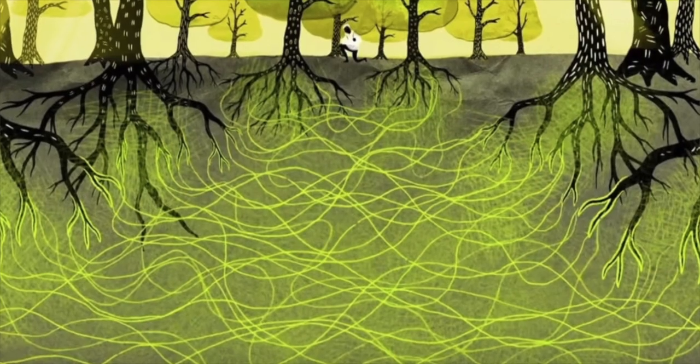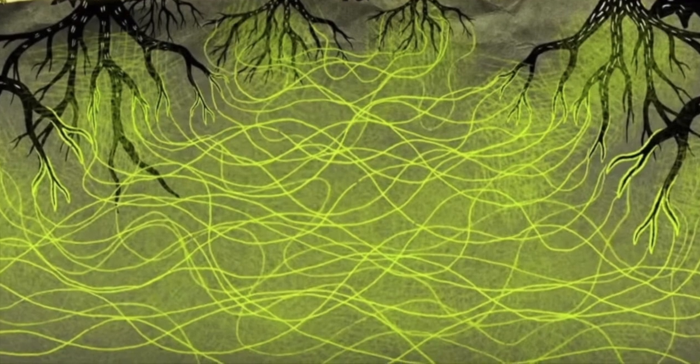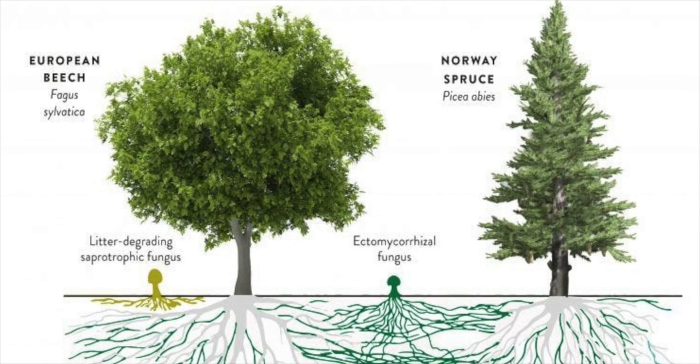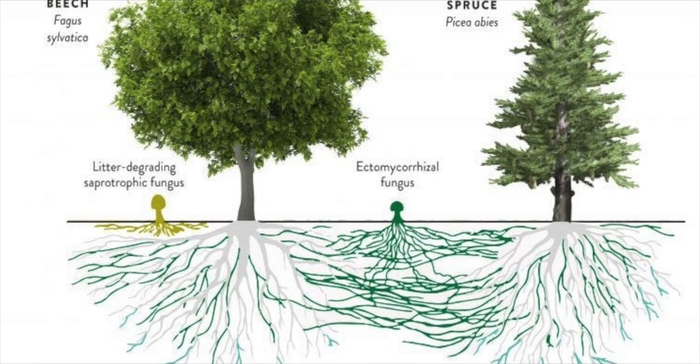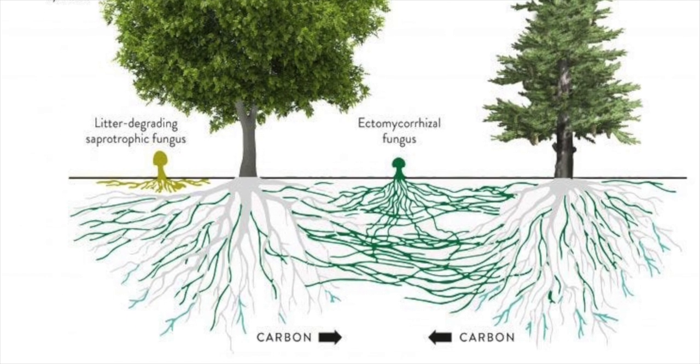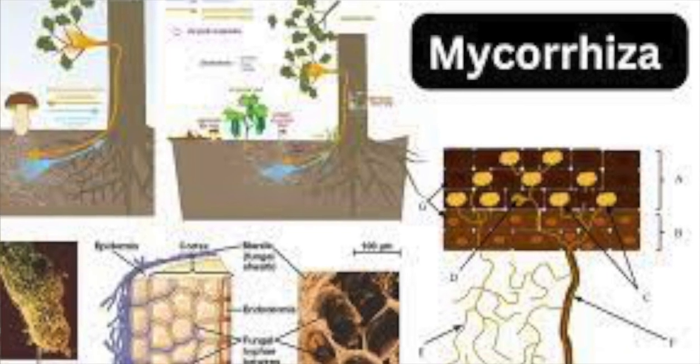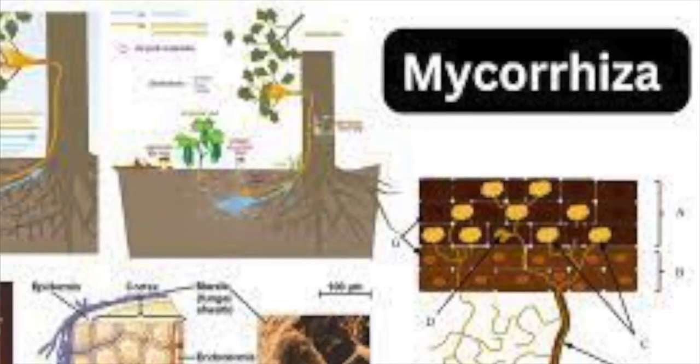But is that truly the case there? Recent studies reveal that beneath the Earth's surface, these trees aren't merely competing with one another. They are collaborating in a remarkable way in partnership with fungi. Diverse tree species are connected to underground mycorrhizal networks where they share vital resources such as carbon, water, phosphorus, and nitrogen. This symbiotic relationship helps them to maximize the growth of the forest as a whole. This incredible discovery sheds light on the perplexing phenomenon observed in our forests.